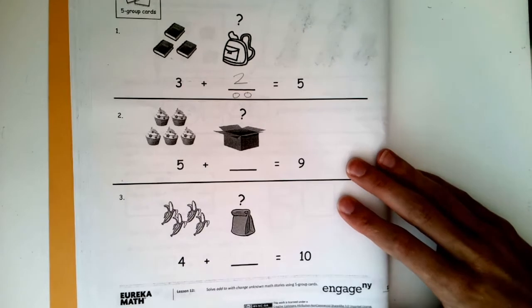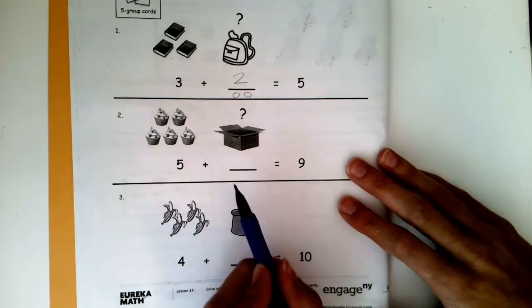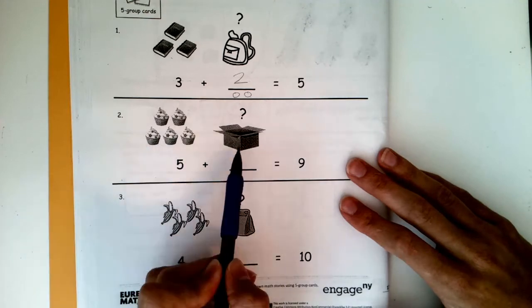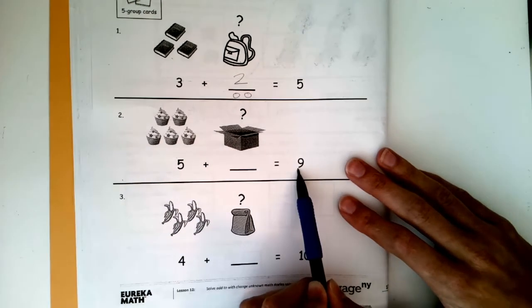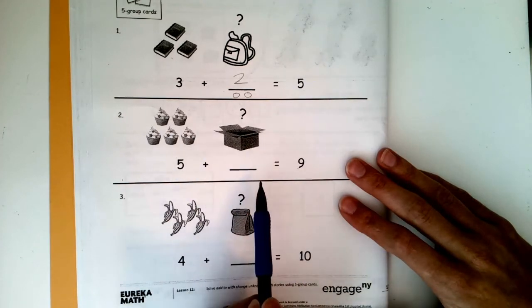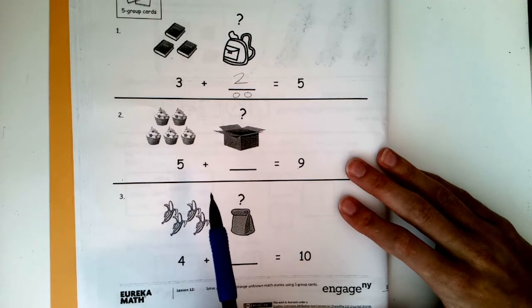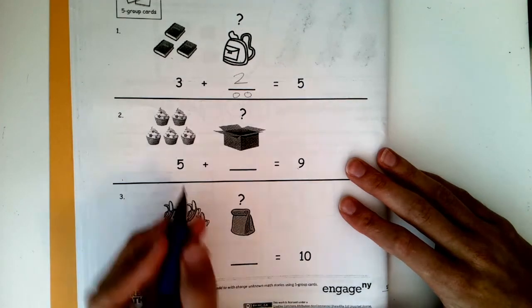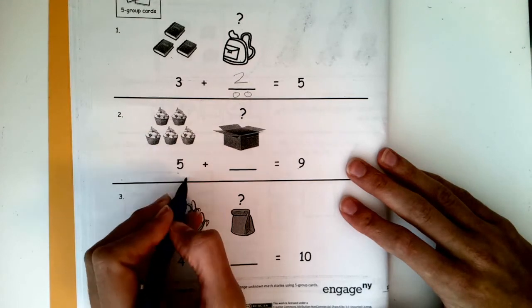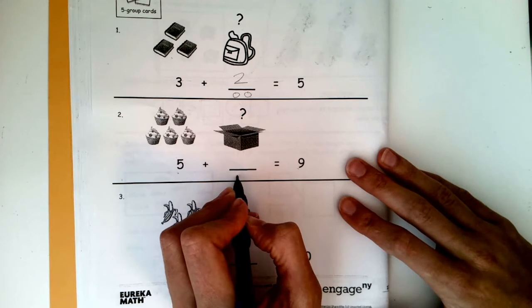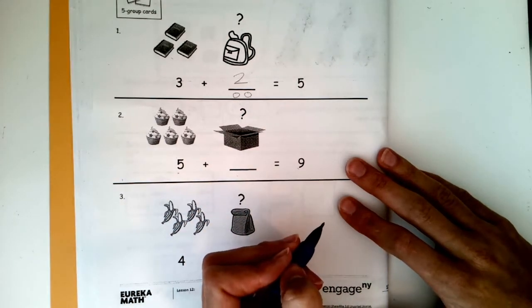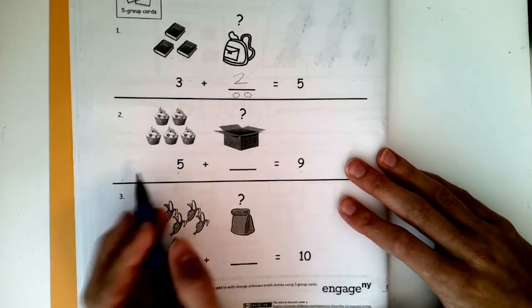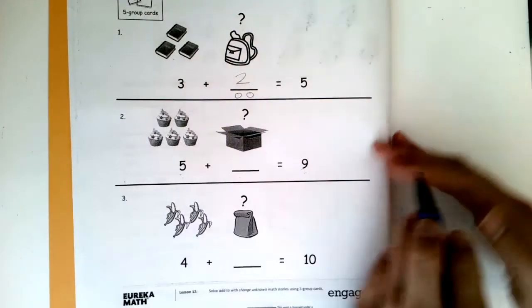Now for number two, we'll do both. We'll use our fingers strategy and we'll use our picture strategy. There were five cupcakes on the table and some more in the box. Altogether we had nine cupcakes. So how many are in the box? Let's do our picture strategy first. What number do we want to start with? What number do we know? We know the number five. We know there are five cupcakes. We don't know how many are in the box, but we know how many altogether. So what number are we going to be counting up to? Right, nine. We need to count from five to nine. Here we go.